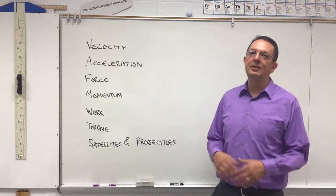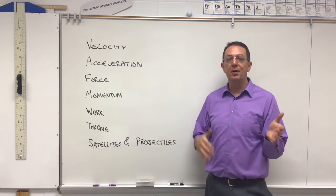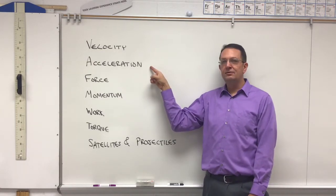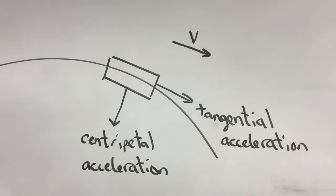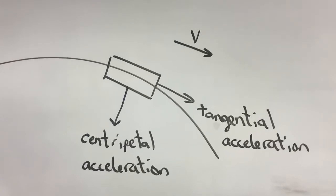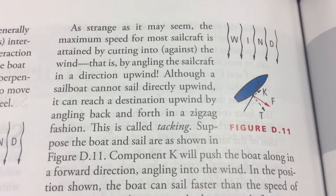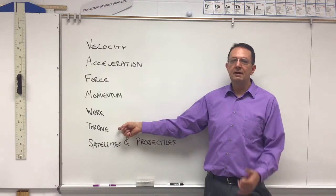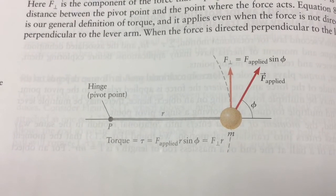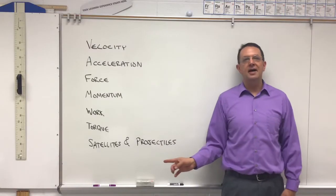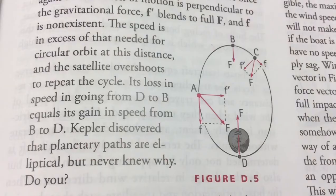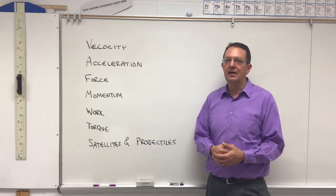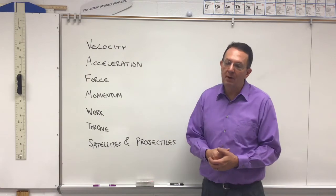This vector component idea where you take a vector and you split it into its two perpendicular parts that add up to give you the original, super useful for velocity and acceleration. If you are turning a corner and speeding up at the same time, there are two components perpendicular to each other. One is the turning a corner acceleration, one is the speeding up acceleration. Forces, obviously useful. Momentum, also a vector. Work. The force and displacement have to be parallel to each other. Torque, the lever arm and the force have to be perpendicular to each other. So you got to find components there. Satellites and projectiles, they actually are satellites and projectiles because of these two forces that are acting parallel to the motion and perpendicular to the motion. And you have to do components to really understand them. So super useful components of vectors.